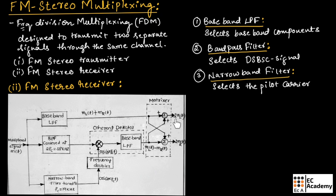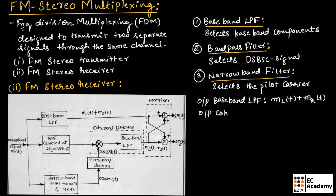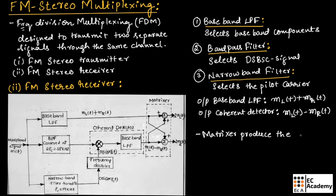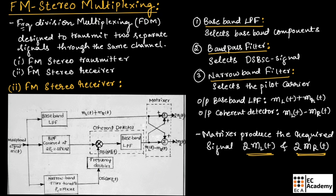Using these two signals, the matrix R produces outputs of 2·ML(t) and 2·MR(t), which are our original signals multiplied by 2. If we divide by 2, we can recover the original message signals. So the output of the baseband filter is ML(t) plus MR(t), the output of the coherent detector is ML(t) minus MR(t), and finally the matrix R produces the required signals 2·ML(t) and 2·MR(t). This is about FM stereo multiplexing.